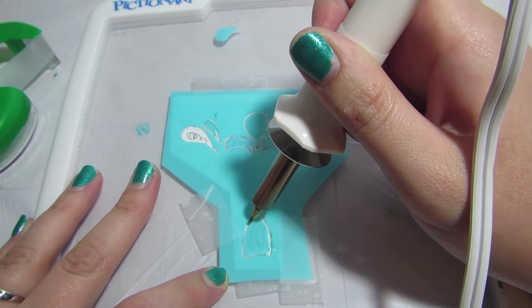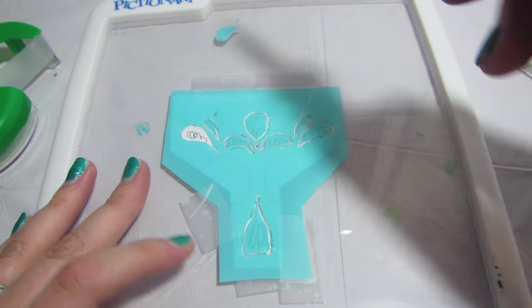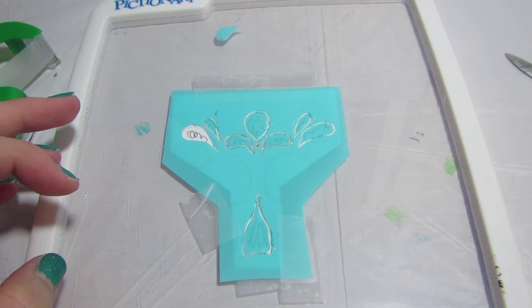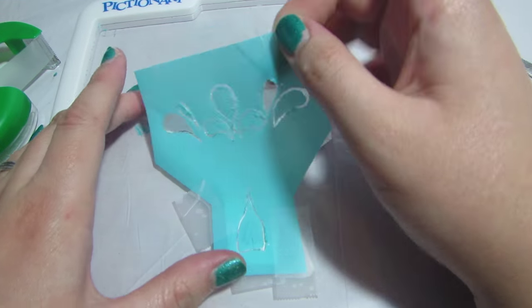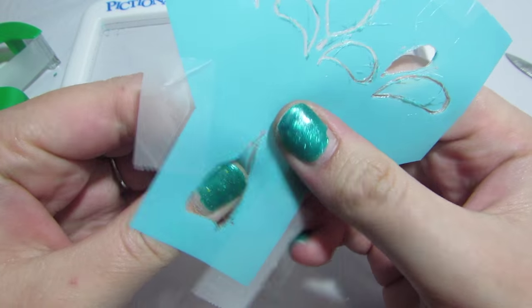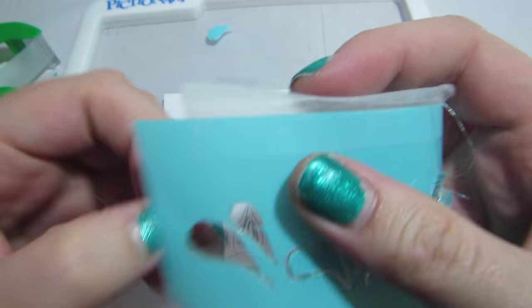Once you are done cutting out the pieces of your stencil, move your heated cutting tool to a safe place to cool down. Remove your stencil film from the glass and carefully pop out any pieces still connected.